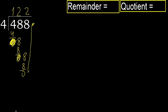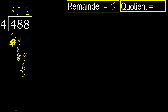There is no number remaining, therefore finish it. Four — 488 divided by four is 122.